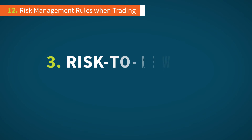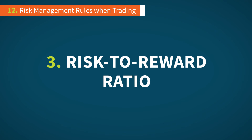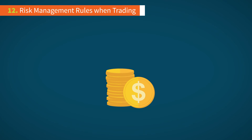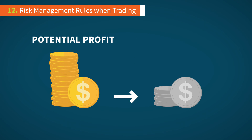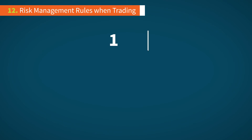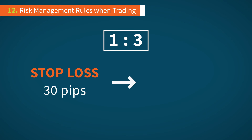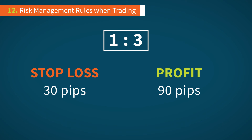The third rule of risk management is following a risk-to-reward ratio. This means that any potential profits are directly related to how much you're willing to risk. If you follow a 1 to 3 risk-to-reward ratio, then a stop loss of 30 pips implies a profit of 90 pips. Similarly, when following a 1 to 2 risk-to-reward ratio, a 30 pip risk implies a 60 pip profit.